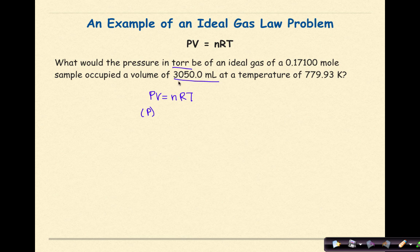I am again solving for pressure. That is going to be in torr. I need to change my milliliters into liters. My gas constant corresponds to liters. So for my volume here, it's going to be 3.05 liters. That is a must-do. For moles, I have 0.171 moles. I am using a different gas constant here. I need to use the gas constant with torr. So that's going to be 62.36 liters torr over mole kelvin. And then finally, at least they give me the temperature in kelvin. So that is 779.93 kelvin.